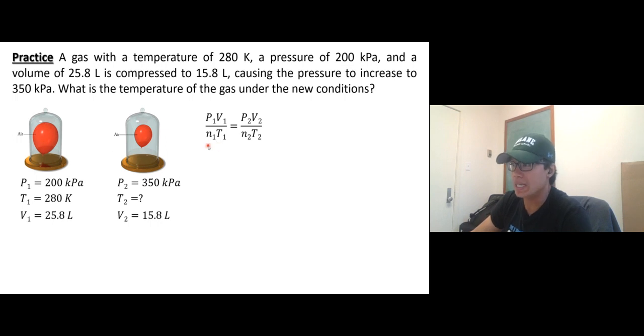I'm going to assume that N1 and N2 are the same, so cancel them out. We want to solve for T2. T1 is in Kelvin, so we're good. I'm moving T2 to the left side, T1 to the top, P1 and V1 to the bottom.